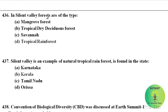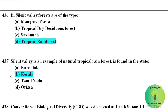In Silent Valley, forests are of the tropical rainforest type. Silent Valley is an example of a natural tropical rainforest found in the state of Kerala.